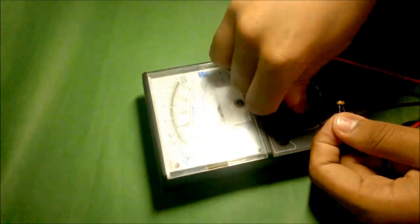LDR is a kind of photoresistor and its resistance depends on light falling on it.